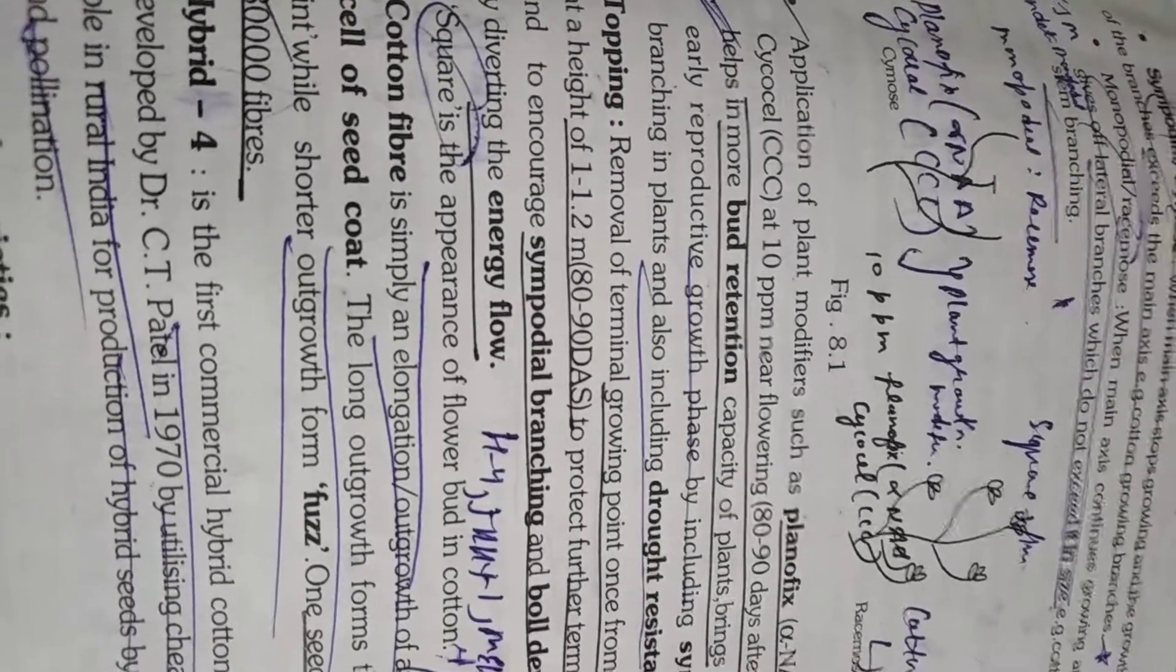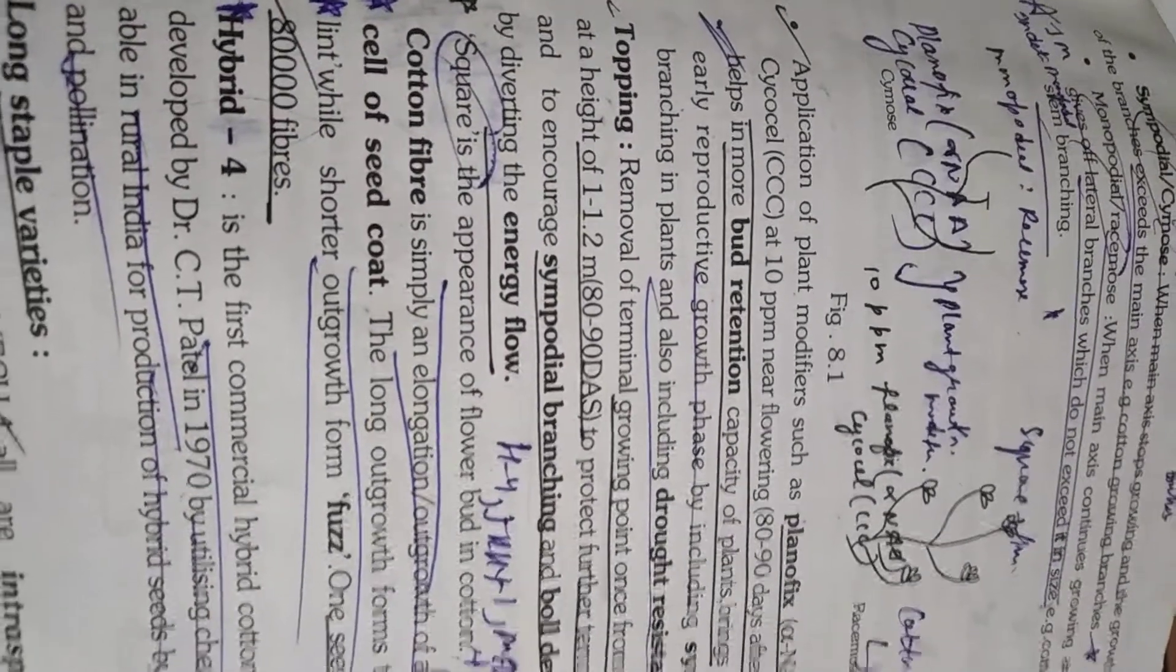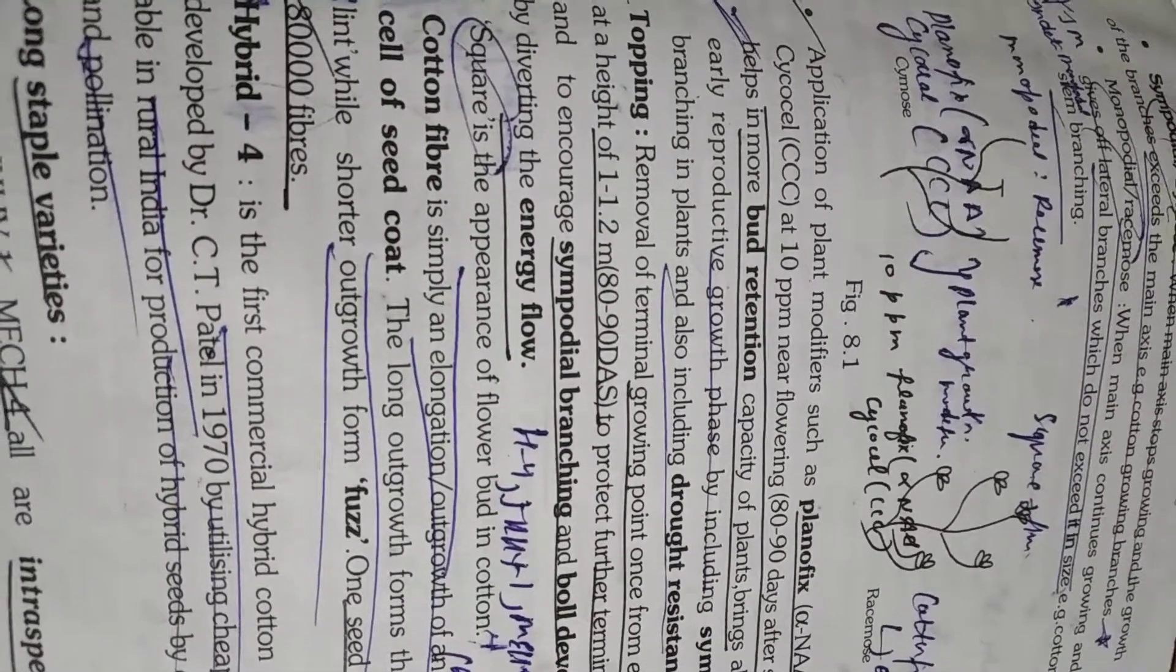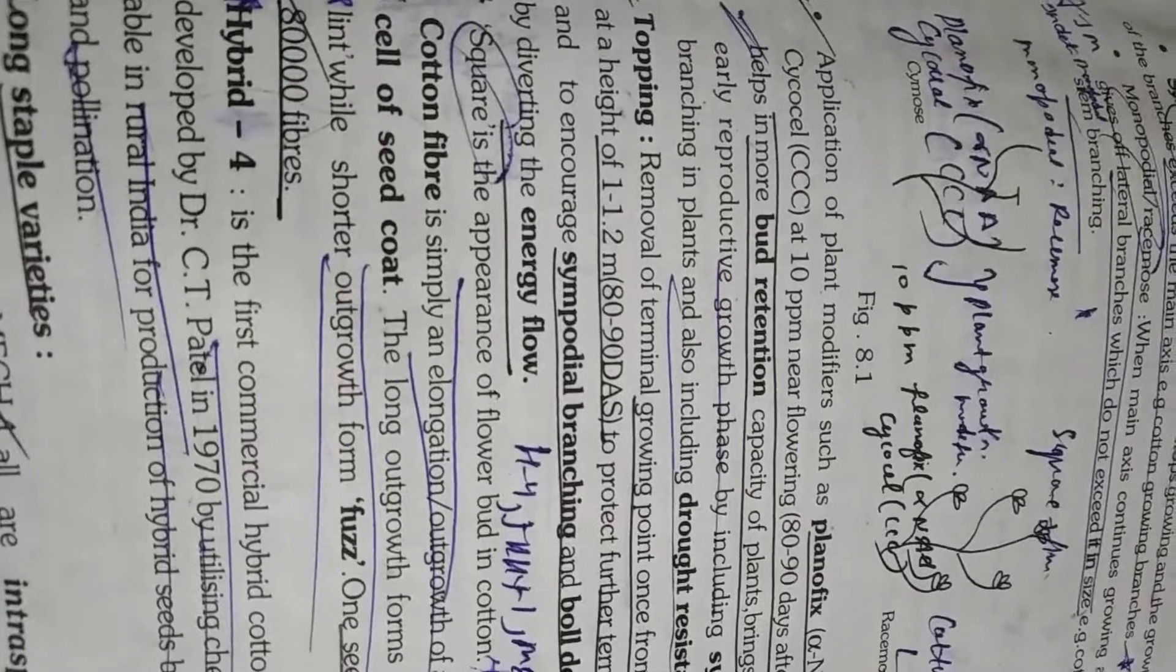And student please remember flower bud in cotton, it is called square. And H4 is the first commercial cotton hybrid developed by C.T. Patel in 1970. This is very important. Students please remember it.